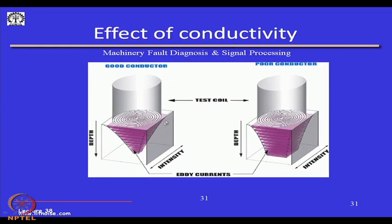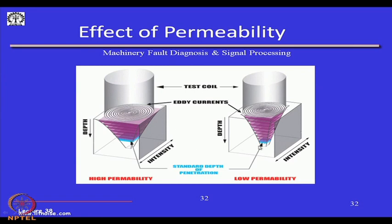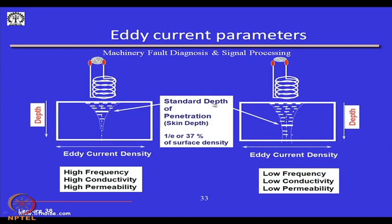There is an effect of frequency: if the primary coil excitation frequency is high, the penetration depth is low; if the frequency is low, the penetration depth is high. The conductivity of the material also plays a role — if it is a poor conductor, the eddy current intensity is different than in a good conductor. Similarly, low permeability and high permeability affect the depth and intensity of eddy currents differently.